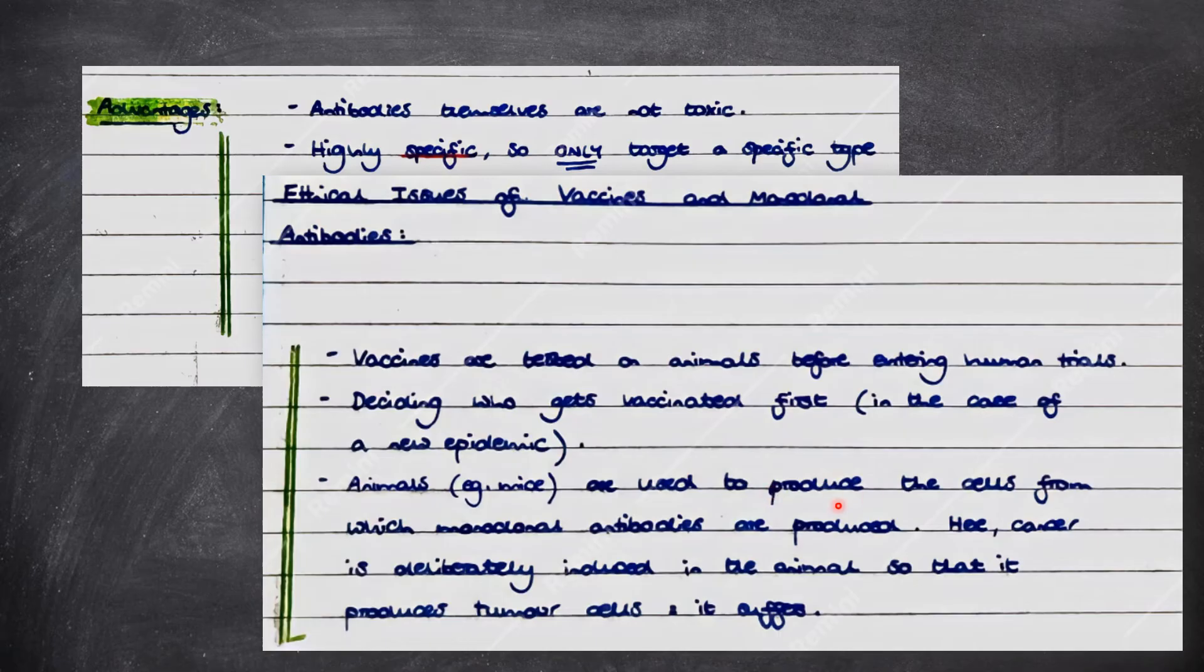Animals such as mice are used to produce the cells from which monoclonal antibodies are produced. And here, cancer is deliberately induced in the animal so that it produces tumour cells, meaning that it suffers in the process.